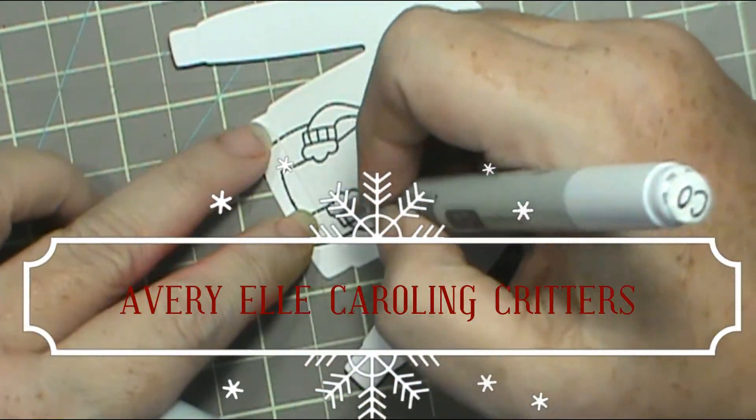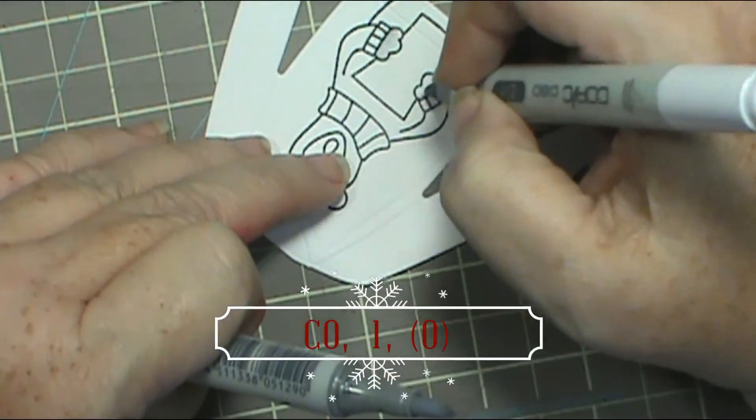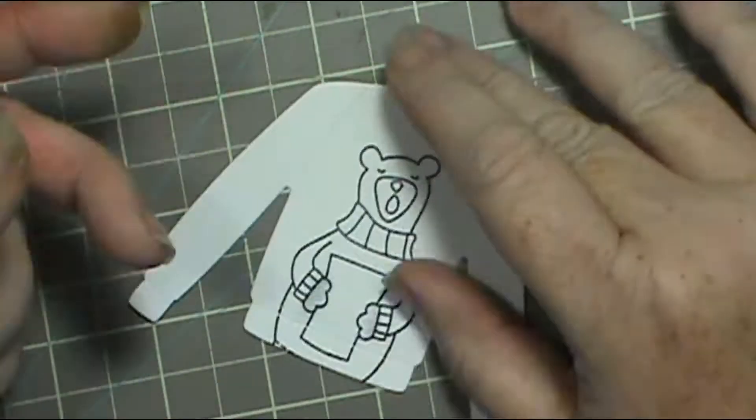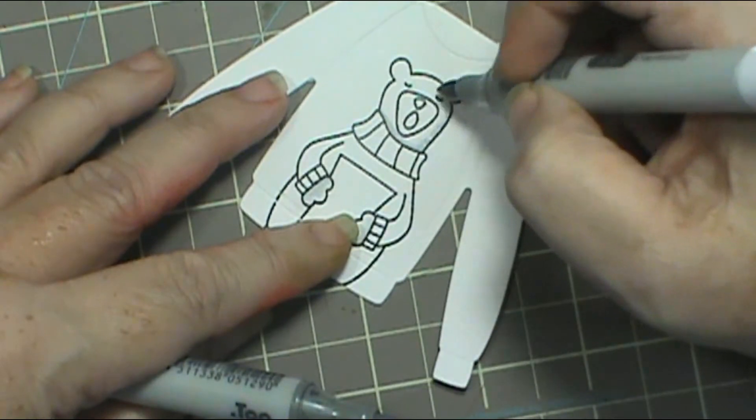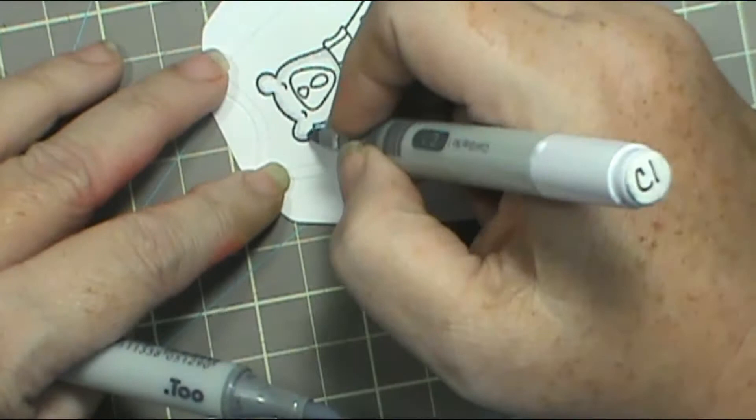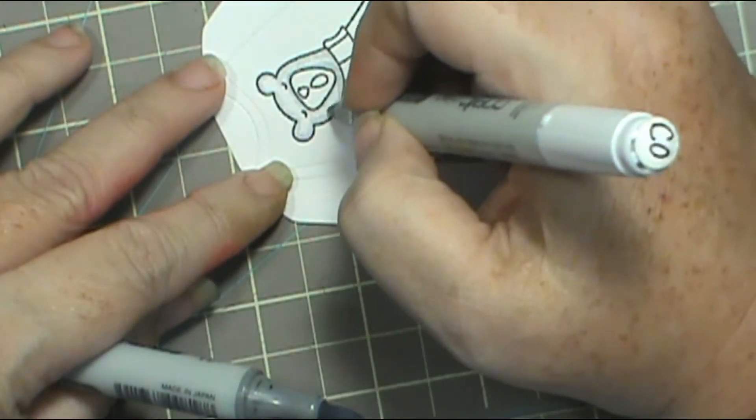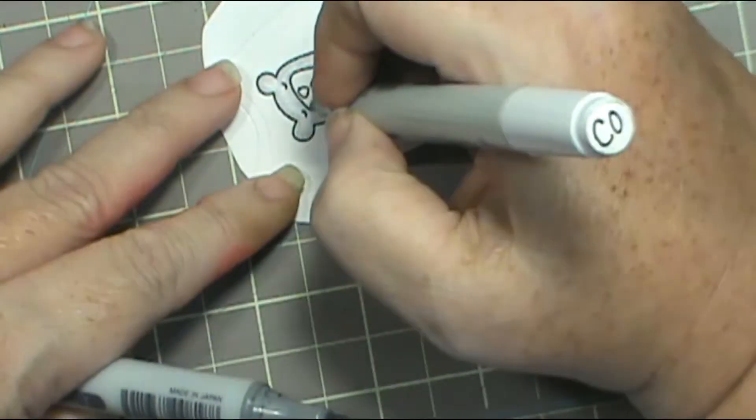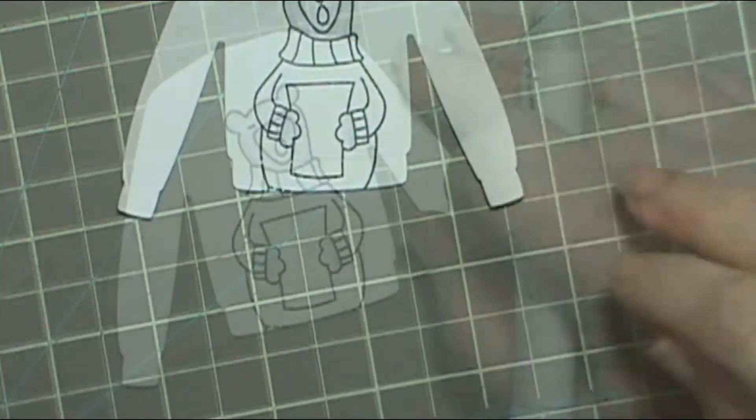Here I just use the Avery Elle Caroling Critters and I put the bear in the center and then I just use the cool gray zero one and then my colorless blender for the bear because I wanted him to be like a polar bear. But remember, if we want something white, we still need to put the shadows in it. I put my shadows on the edges and then got lighter as I went to the center. So that made my bear look more round.